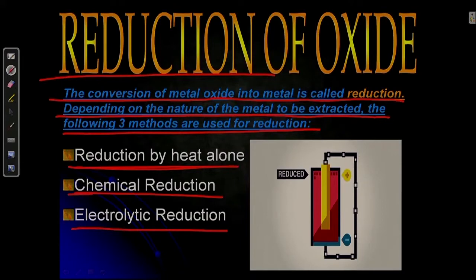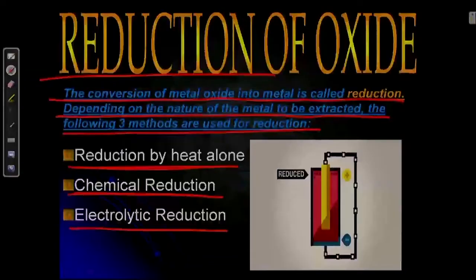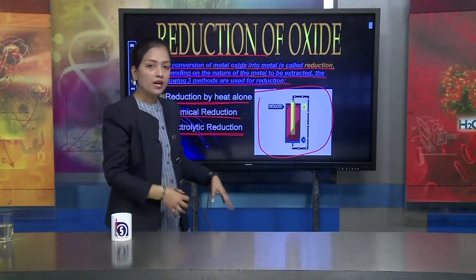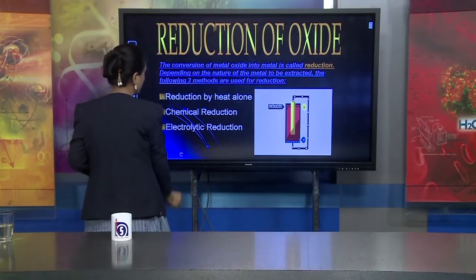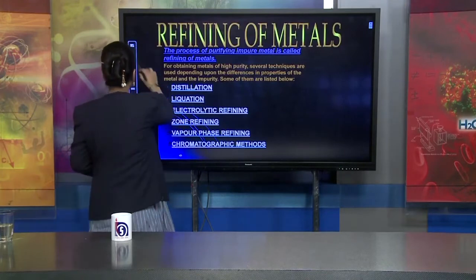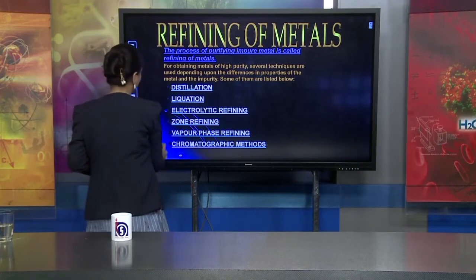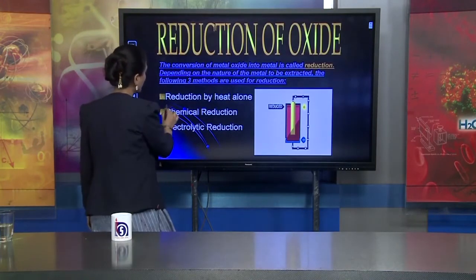The three reduction processes are: number one, reduction by heating alone — simply, we heat the oxide ore and the metal is obtained. Number two is chemical reduction, where a reagent helps carry out the reduction. Number three is electrolytic reduction.